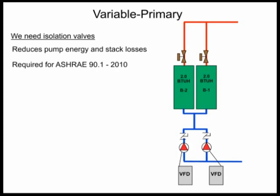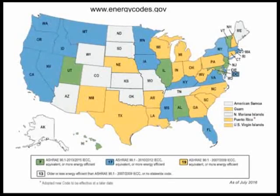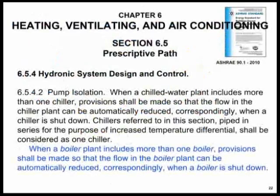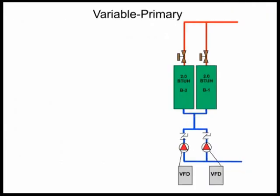What does your state stand for ASHRAE 90.1? You can look it up online. This map here is as of July 2016. You can see where your state is in terms of the energy code. ASHRAE 90.1 2010 addresses pump flow and boiler stack losses. Specifically, when a boiler plant includes more than one boiler, provisions shall be made so that flow of the boiler plant can be automatically reduced when a boiler is shut down — due to stack losses and pump energy. If you're not going to use the boiler, why would you pump water through it?